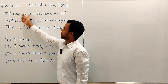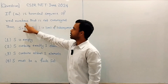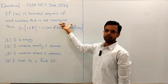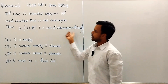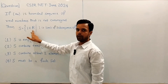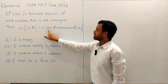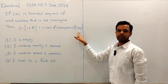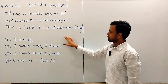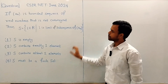The question is: if A_n is a bounded sequence of real numbers that is not convergent, then the set S, which equals the set of all L belonging to R such that L is a limit of a subsequence of A. We have to select the correct option from the four given options.